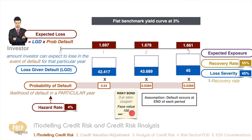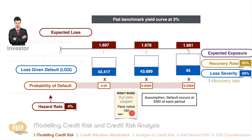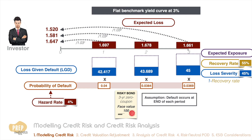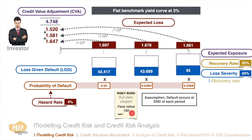Given the probability of default calculated earlier, we can calculate the expected loss for each year. Because these amounts are in the future, we discount them back to today using the benchmark rates. Summing up the present values gives us the credit value adjustment, or CVA.